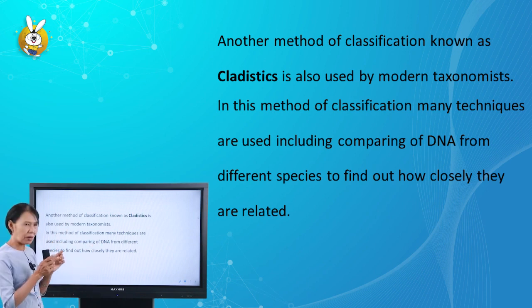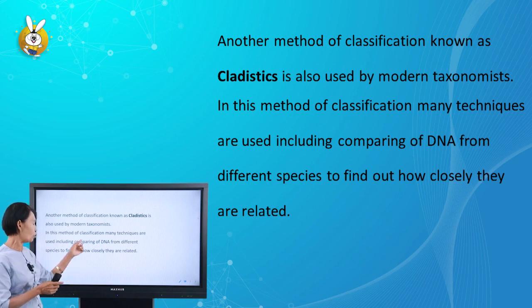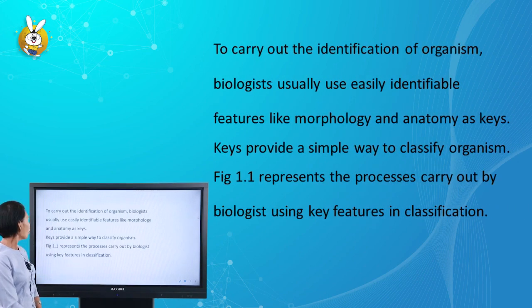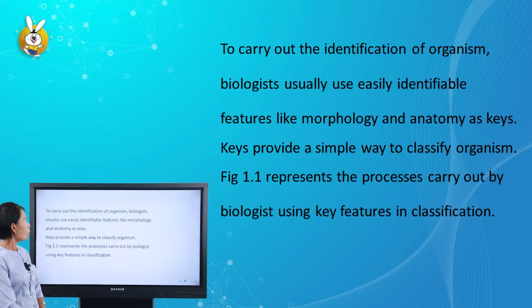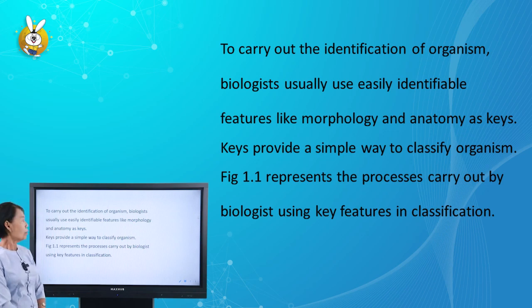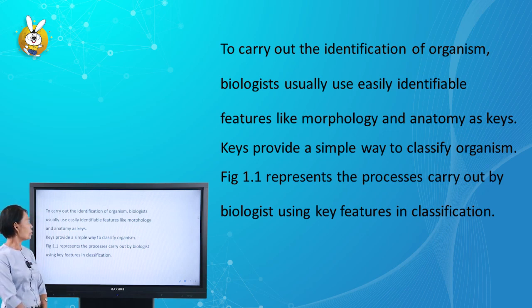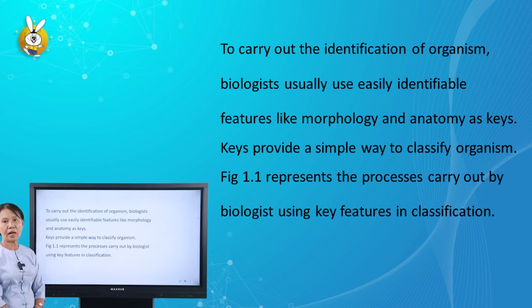To carry out the identification of an organism, biologists usually use easily identifiable features like morphology and anatomy as keys.